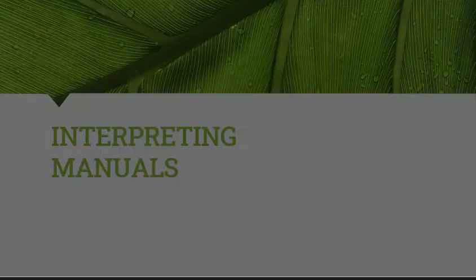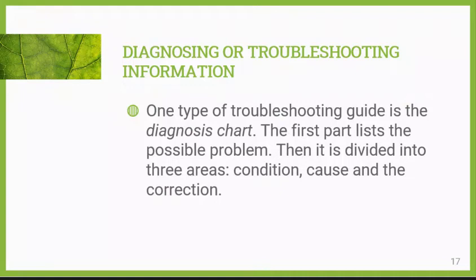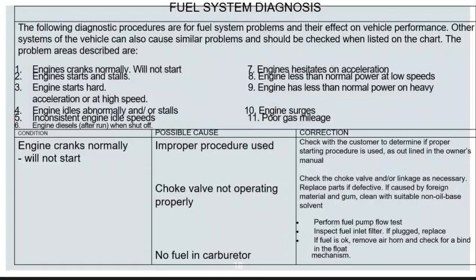Now, how do we interpret manuals? One type of troubleshooting guide is the diagnosis chart. This chart lists possible problems and is divided into three areas: condition, cause, and correction. For example, a fuel system diagnosis chart covers problems such as 'engine cranks normally,' 'engine starts then stalls,' and so on, identifying the condition, the possible cause, and the correction.